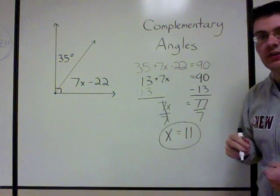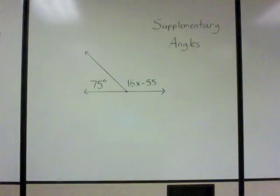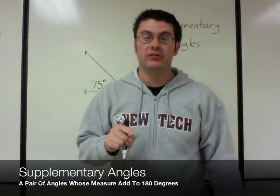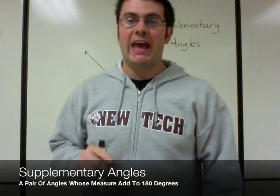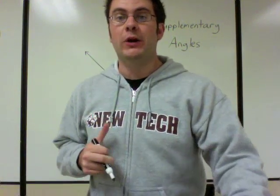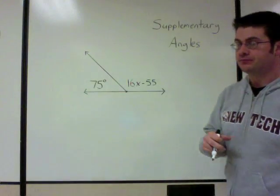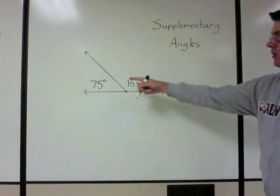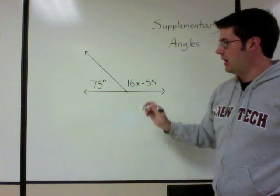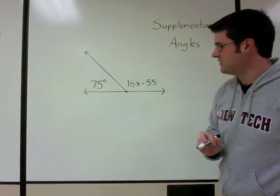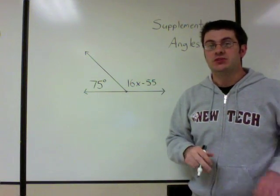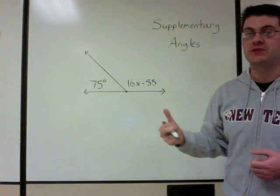Now let's look at supplementary angles. Supplementary angles are two angles whose measures add up to 180 degrees. Here we have one angle at 75 degrees and another whose measure is 16x minus 55, and we need to solve for x.